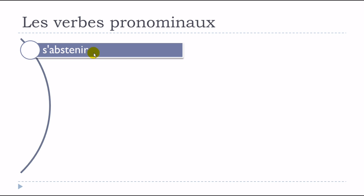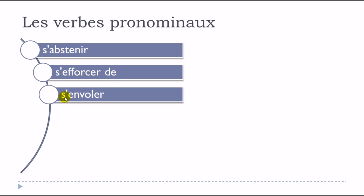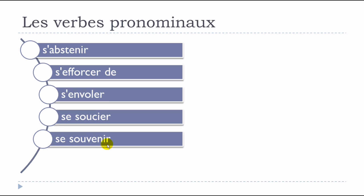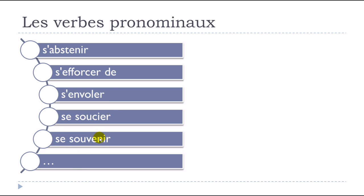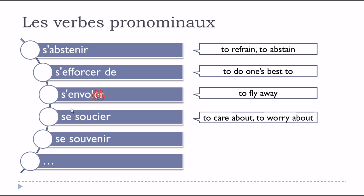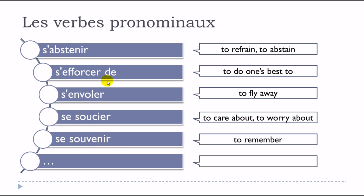Another group of verbs that only exist in pronominal form: s'abstenir, s'efforcer de, s'envoler, se soucier, se souvenir. These verbs are only used as verbes pronominaux — with se before them — and they don't exist without it.